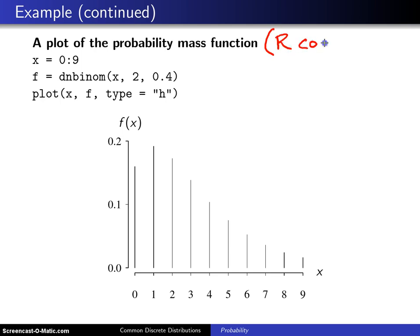The way this is drawn in R, this is our code here, is to set x to the support. Now the support goes all the way from 0 to infinity. I'm only going to plot this from 0 to 9 because I can't go all the way out to infinity. Then I set f to the probability mass function, and that's what the letter d gives me here of a negative binomial random variable over the range 0 to 9 with parameters r equals 2 and p equals 0.4.